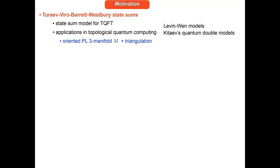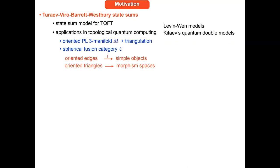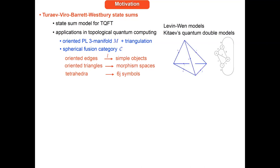Basically, what one takes is an oriented piecewise-linear three-manifold and a triangulation — the piecewise-linear structure is not important, one could also work in the smooth framework. Then one takes the categorical input: a spherical fusion category. One assigns to the oriented edges of the triangulation simple objects, to the oriented triangles morphism spaces given by the objects on the boundary of the triangle, and to the tetrahedra one assigns 6j symbols, also known as F-matrices.